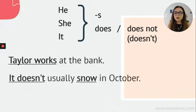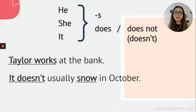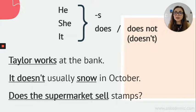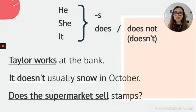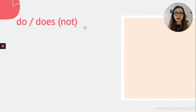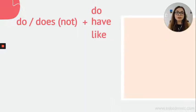Let's look at a negative one: It doesn't usually snow in October. It's not something usual for it to snow in October. So we have used 'doesn't' and also the basic form of the verb — not with an S. For questions, we say: Does the supermarket sell stamps? We use 'sell,' not 'sells,' because it's not a positive sentence. We change the order — Does the supermarket sell? We use 'does' because the subject is 'it.' So with do or does questions, we always put the basic form of the verb: do have, do like, does it have — not 'does it has.'